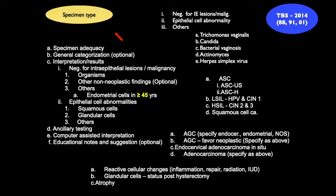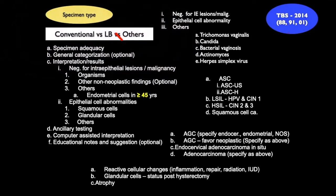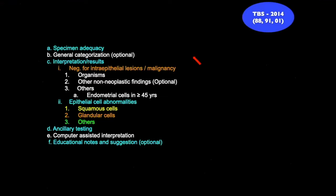The specimen type is very important. The first thing you have to know is whether it is a conventional smear or a liquid-based preparation or any other method. There are mainly six components in the Bethesda 2014 report: one is specimen adequacy, second is general categorization — which is optional. Most of us don't use general categorization because it overlaps with the third component.